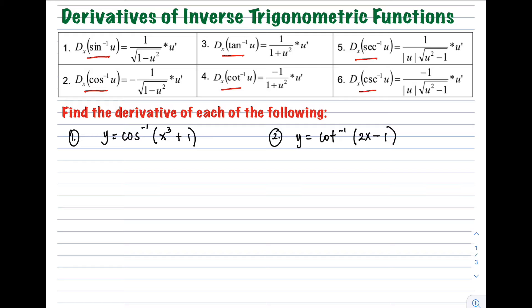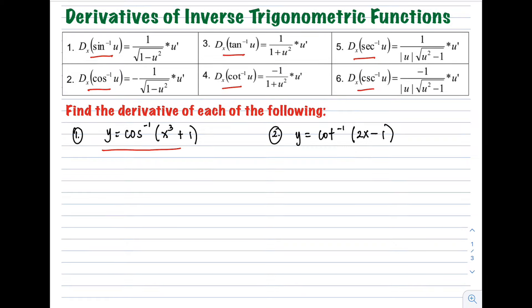Example number one: find the derivative of y equals arccos of (x³ + 1). The first step is to identify u. Since our inverse trigonometric function is arccos, therefore u is the binomial x³ + 1. After getting u, we find its derivative: the derivative of x³ + 1 is 3x².